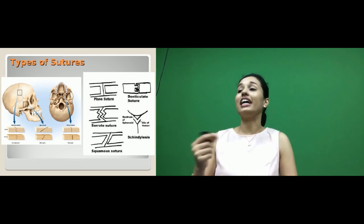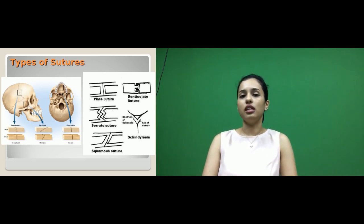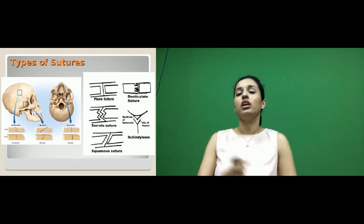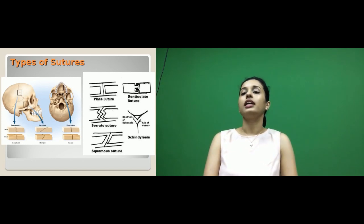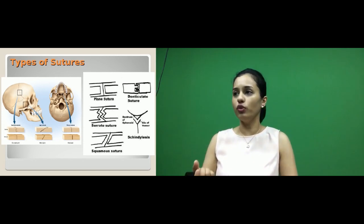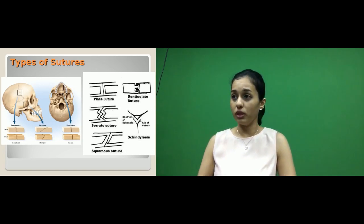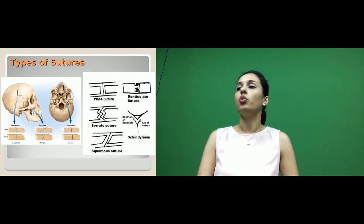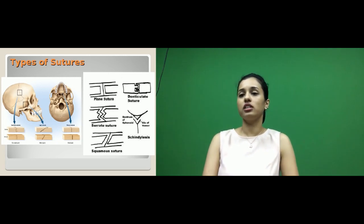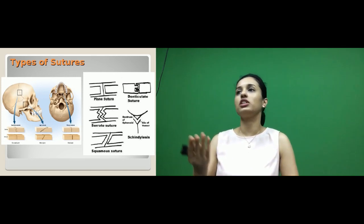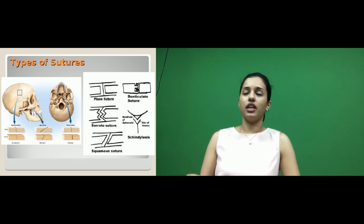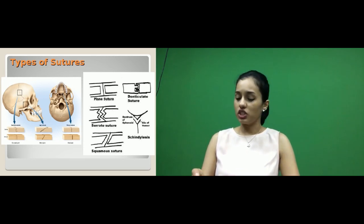The squamous type has beveled edges and can be seen between the temporal and the parietal bones. Schindylesis is a wedge-and-groove type — a good example is the sphenoid bone and the vomer, where a wedge-shaped sharp edge articulates with a groove. Denticulate sutures are seen especially in the lambdoid sutures. These are the types of sutures depending upon the shape of the bony margins.